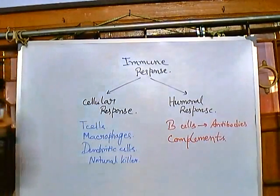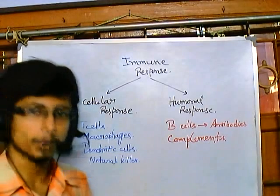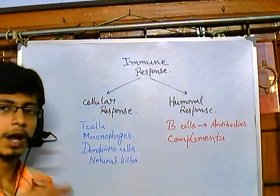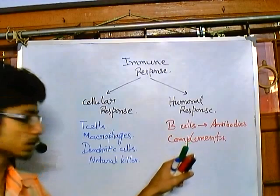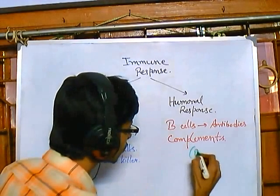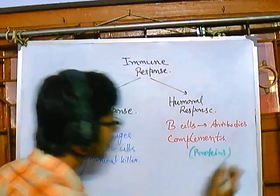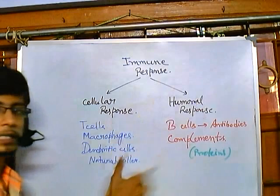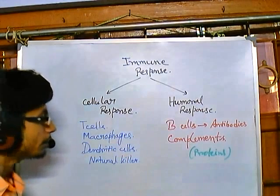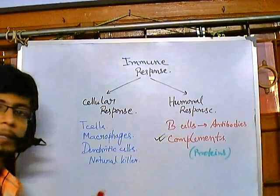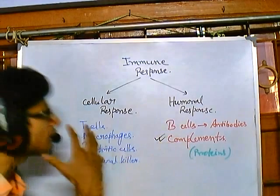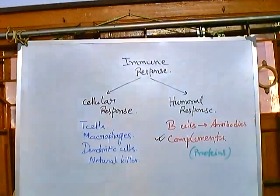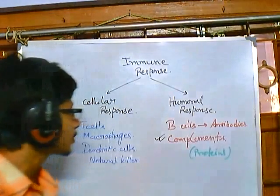Complement molecules are small chemical molecules, mostly proteins or polypeptide molecules. Sometimes they are made up of other molecules like proteoglycan or lipid molecules, but mostly they are protein molecules. These are the two different types of responses, and in this particular lecture we will be talking about the complement system and how these complement proteins help establish the response against pathogens.